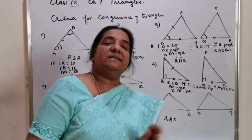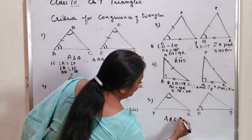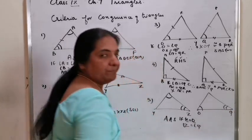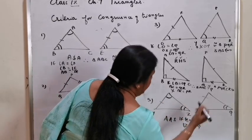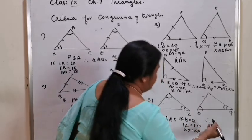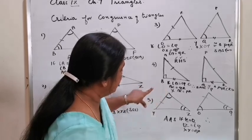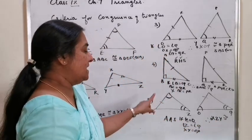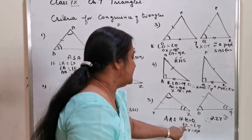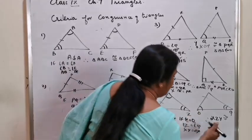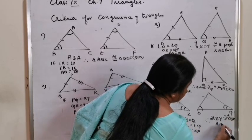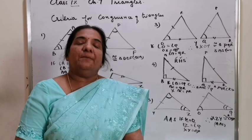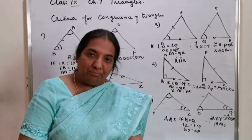That means if angle X and angle O are equal, and angle Z and angle Q are equal, and any one side XY and OP are equal, then triangle XZY is congruent to triangle OQP. Before writing the second triangle, see whether X corresponds with angle O and Z corresponds with angle Q. This is called AAS congruency. By taking any three elements, we can prove the triangles are congruent.